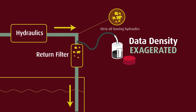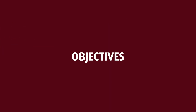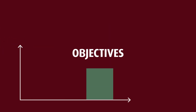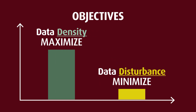Another common error is taking a sample from the tank in a hydraulic system. Here the oil has already been through the return line filters and any debris from the system has already been removed, so the data density of the sample has been reduced by the filter. The objectives of a good sampling procedure are to maximize data density and minimize data disturbance.